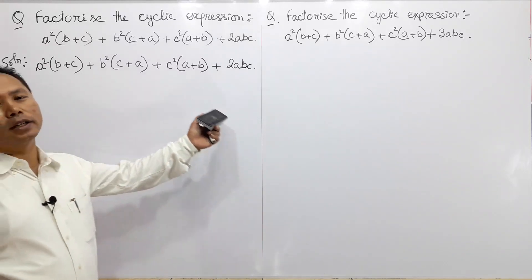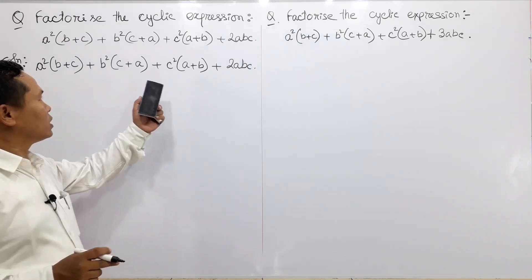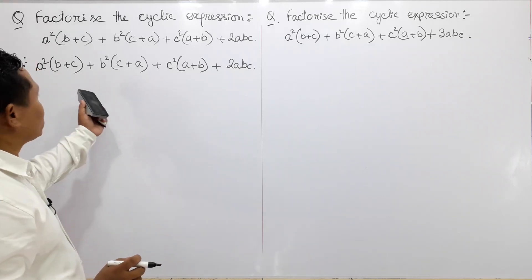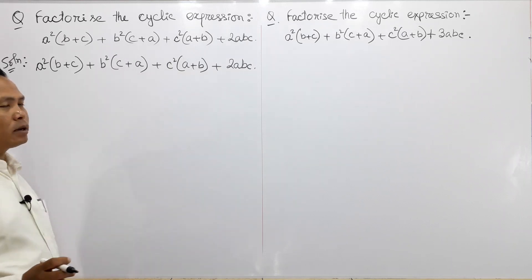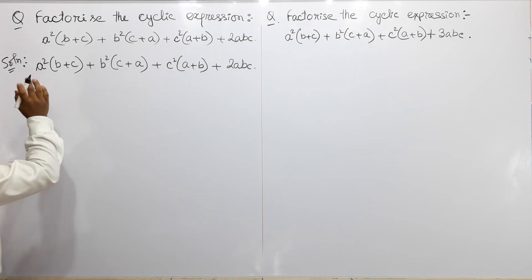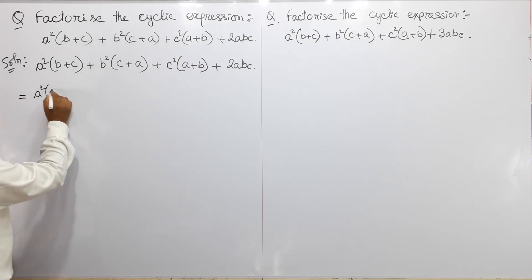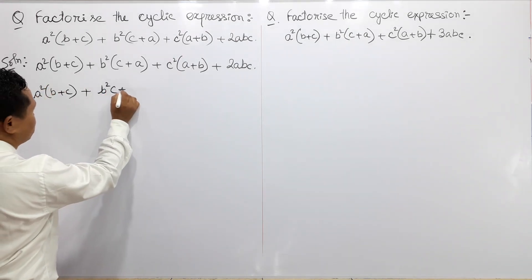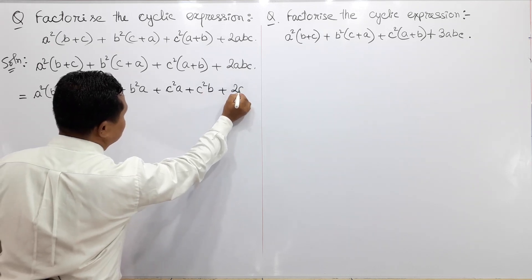We can use A squared B plus C plus A. We can also use A squared B plus C and C plus A to multiply. We arrange using the descending power of a letter: B squared C plus B squared A plus C squared A plus C squared B plus twice ABC.